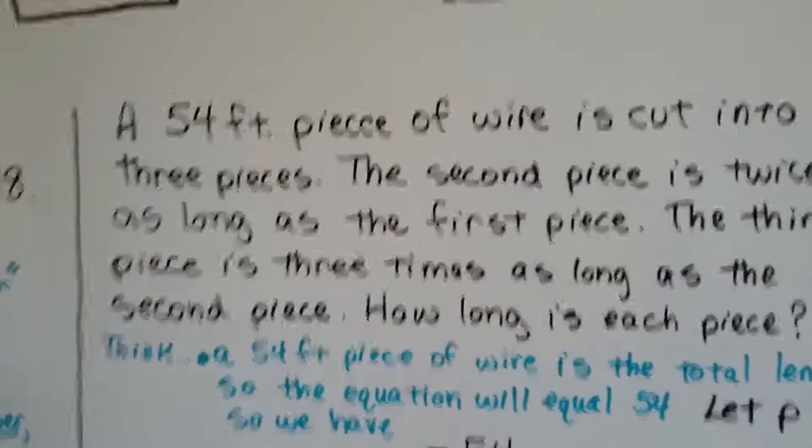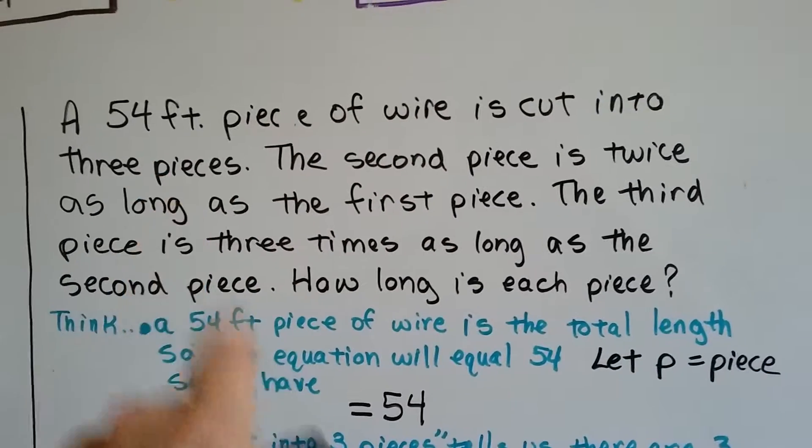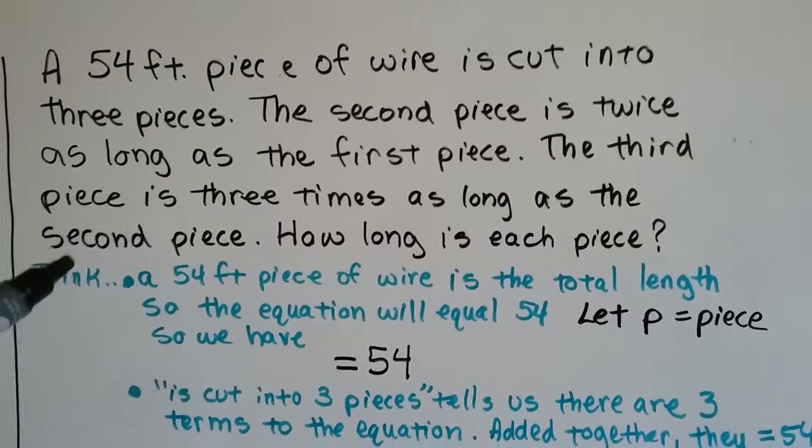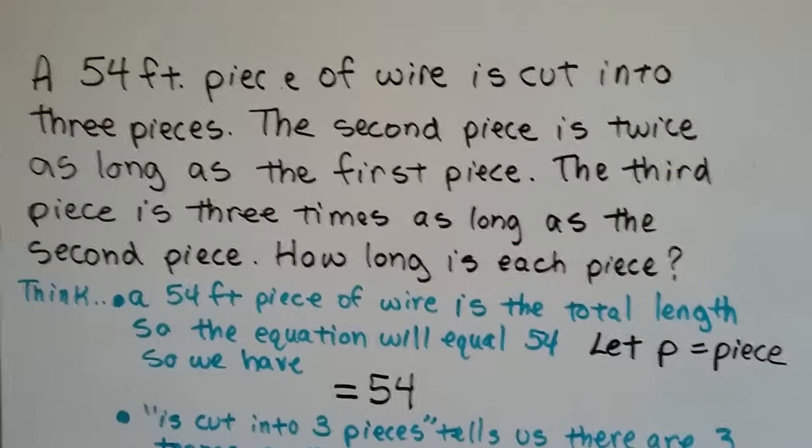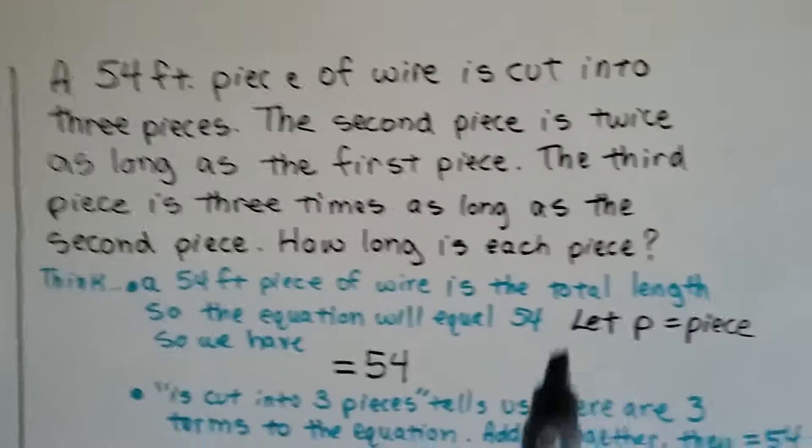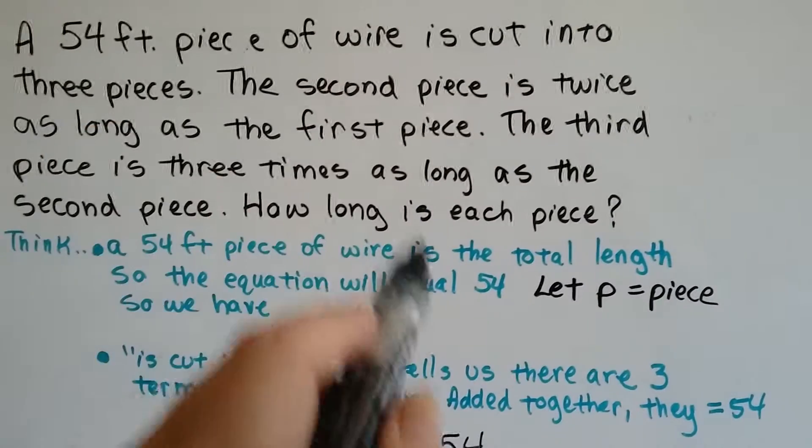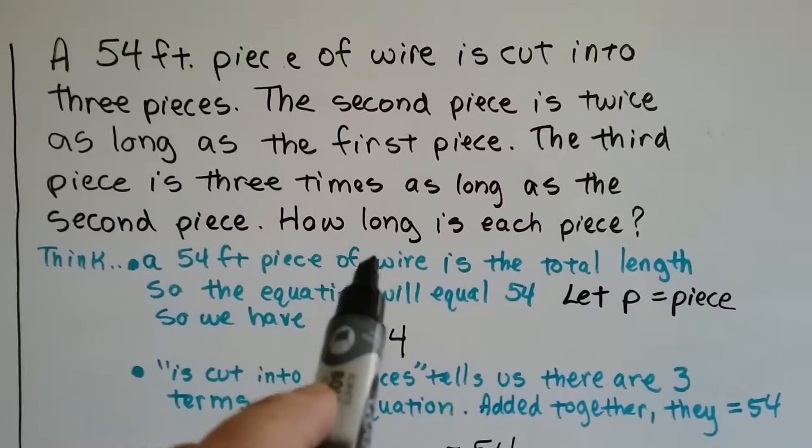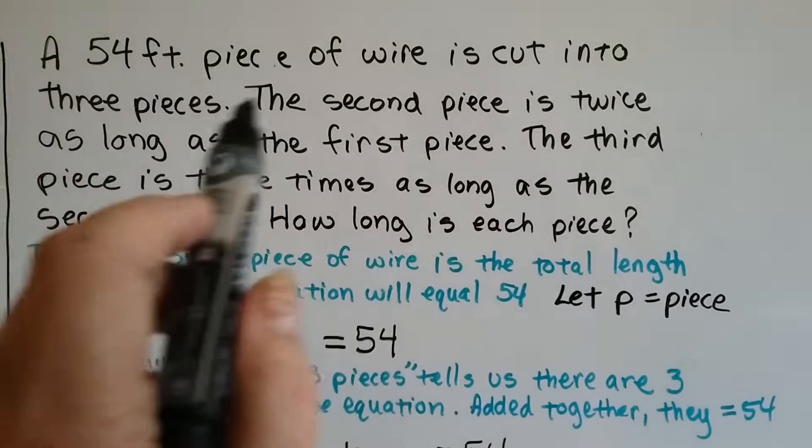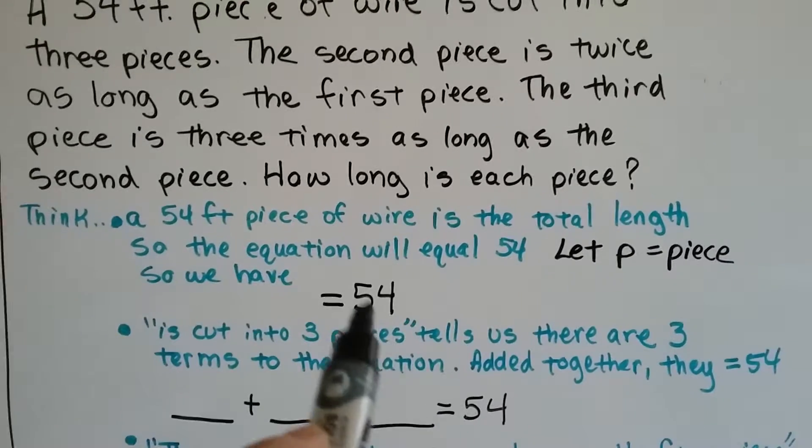A fifty-four-foot piece of wire is cut into three pieces. The second piece is twice as long as the first piece. The third piece is three times as long as the second piece. How long is each piece? Is that confusing? We're going to break it down into little pieces. We're going to let P equal piece, because that makes sense. We need to turn the unknown amounts into variables that make sense. A fifty-four-foot piece of wire is the total length. That was the total that was cut into three pieces. So we know it's going to equal fifty-four.